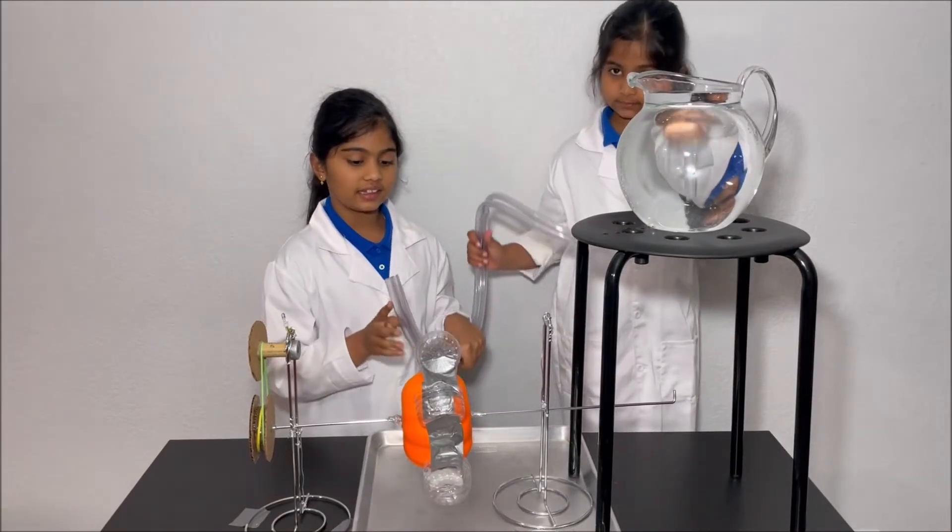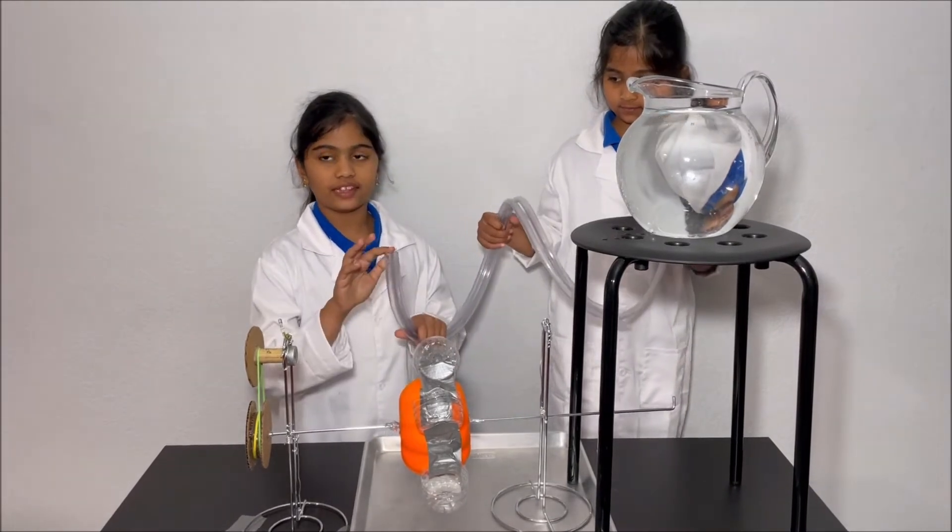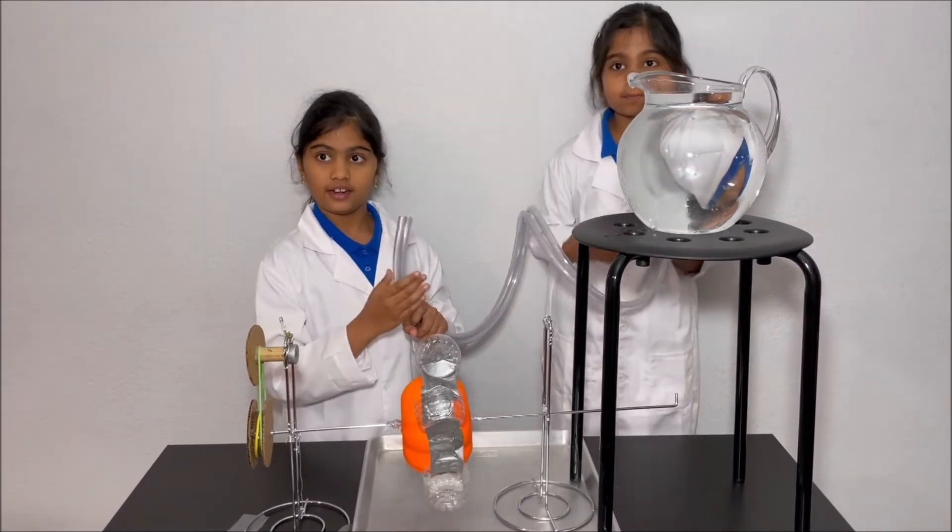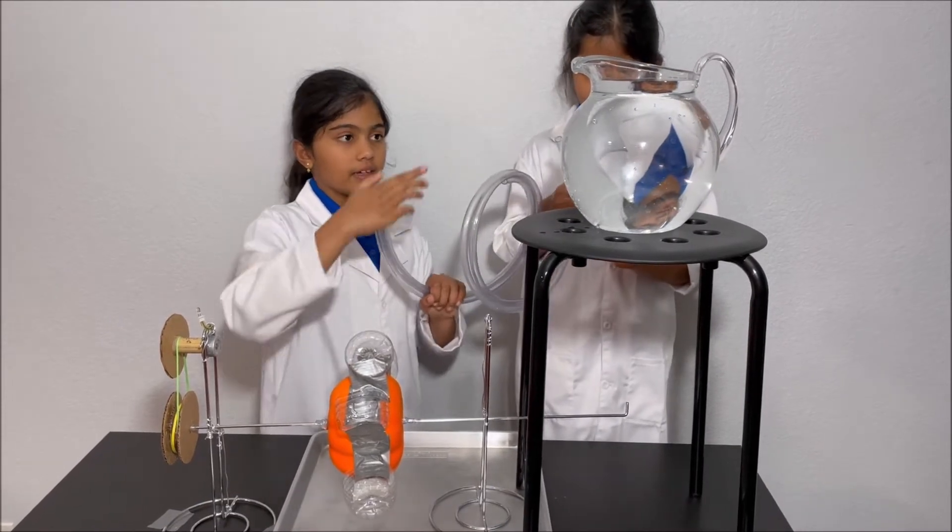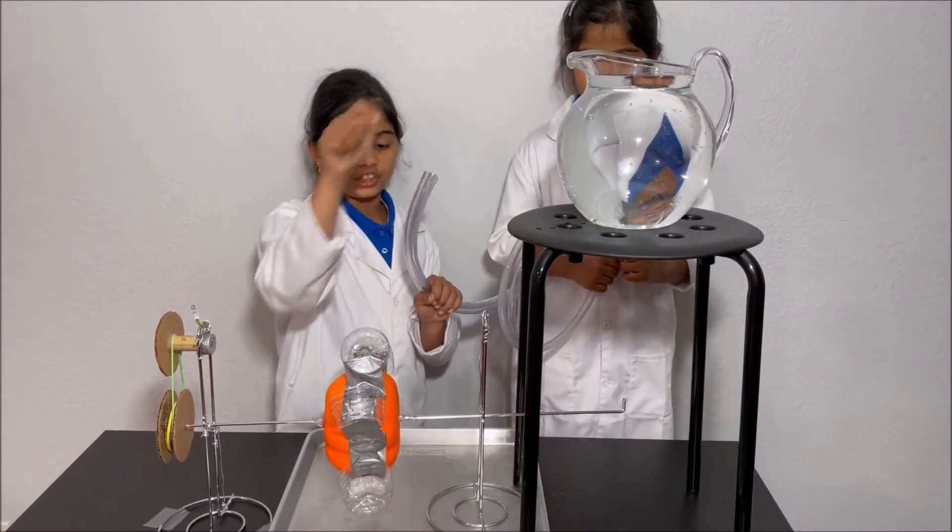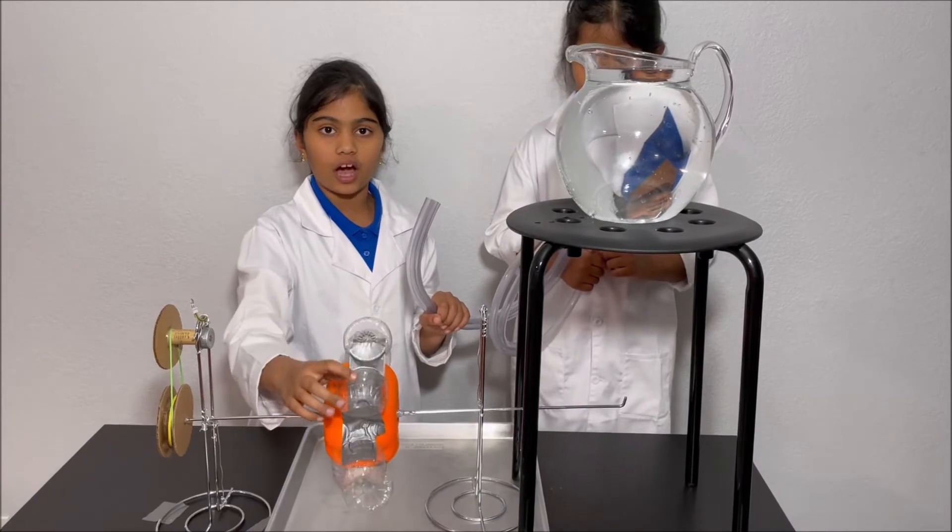Then take the clear pipe and fill it with water. We're going to use the clear pipe to get water from the pitcher to rotate the water wheel.